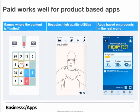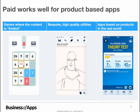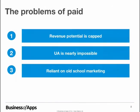Lastly, apps based on real-world products work well with the paid model. For example, the Official Driving Theory Test app in the UK offers practice tests to help prepare for the British driving licence theory test. It's already available as a DVD, CD, or book, so in the mobile context people can simply buy it as a separate piece of content — just as they'd buy a book or DVD to study with. That's where the paid model works really well when selling a product.